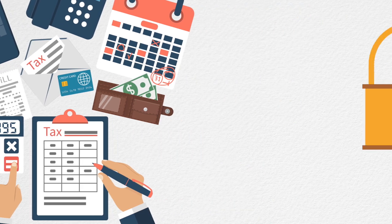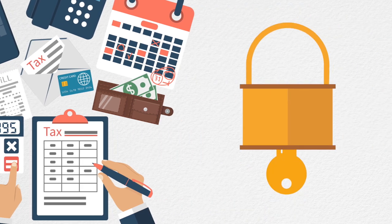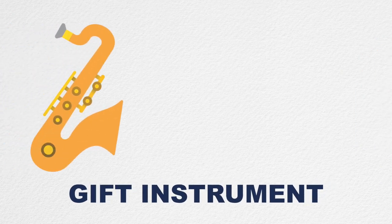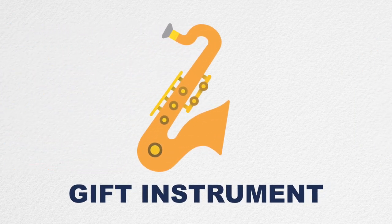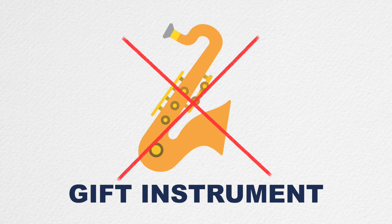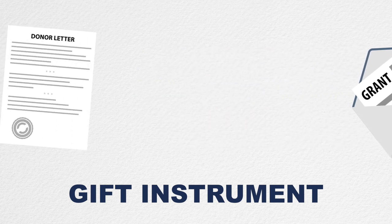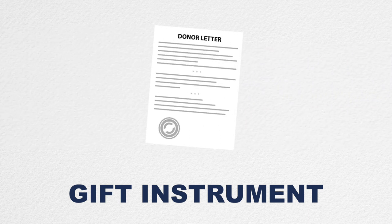Restrictions can only legally be placed on funds by their donors. The shape and form of the restrictions are defined in the gift instrument — and no, we're not talking about the saxophone you got for your birthday. Examples of gift instruments include award letters from foundations or letters from individual donors.